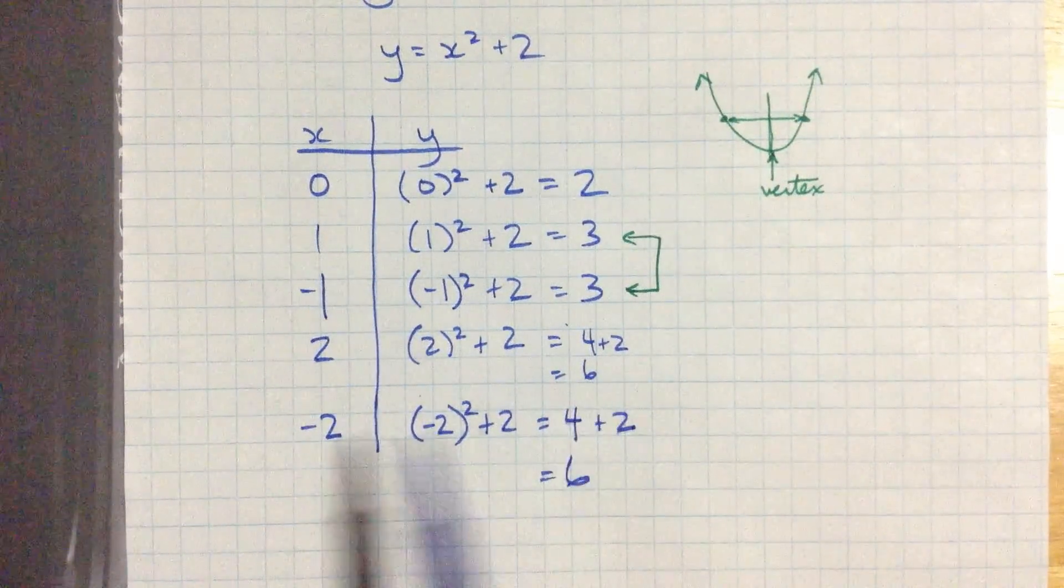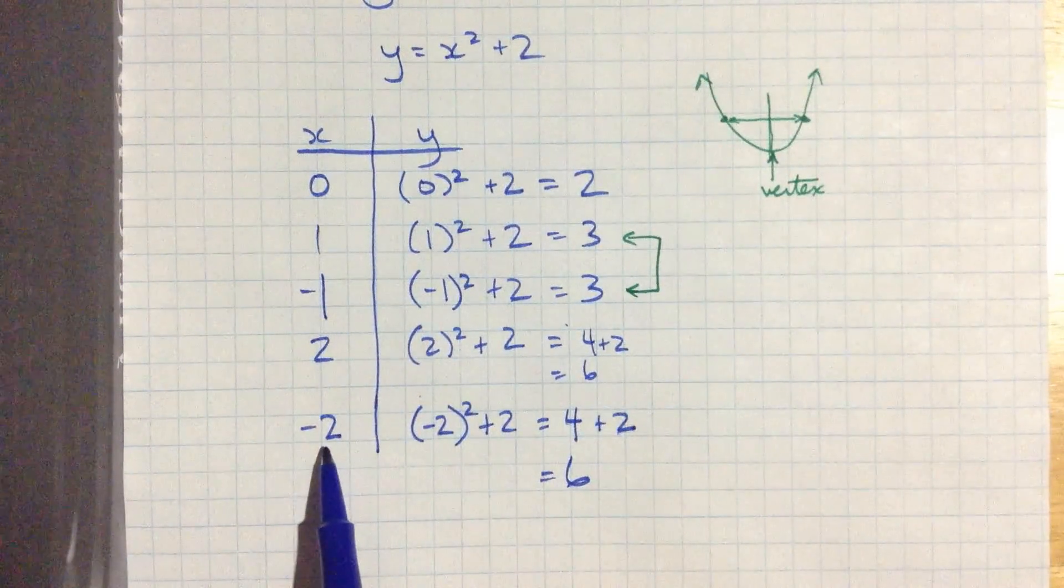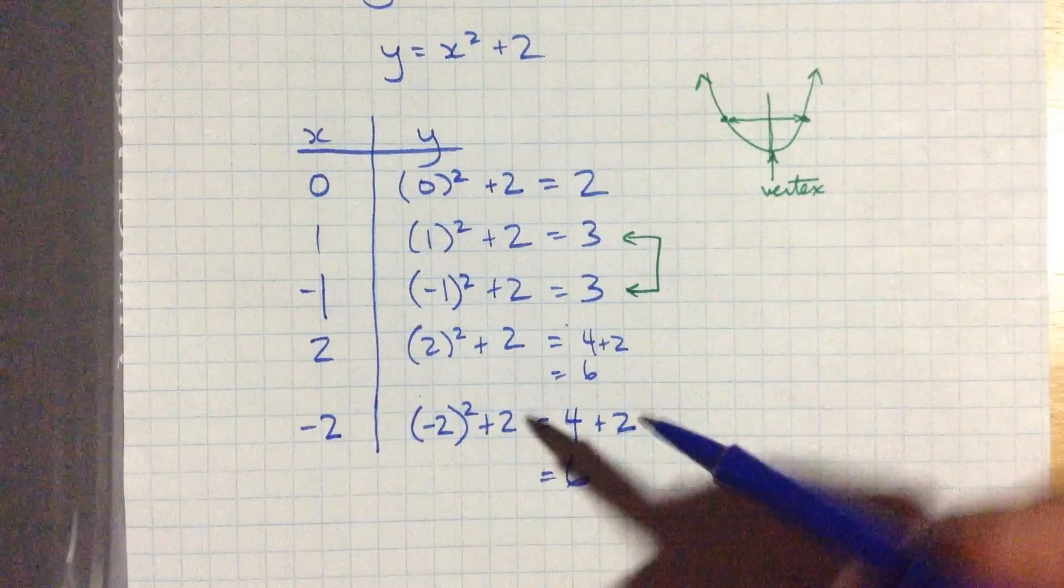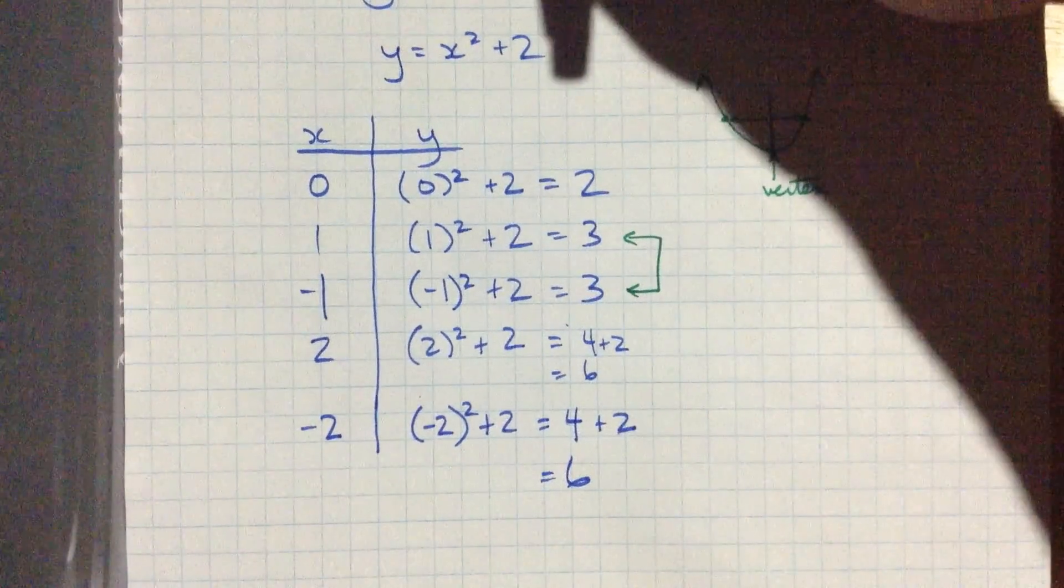So that makes sense because I've gone 2 away from 0, which I know now is my vertex. And this is also 2 away from 0. So it makes sense that I've got these repeated values. So let's graph this.